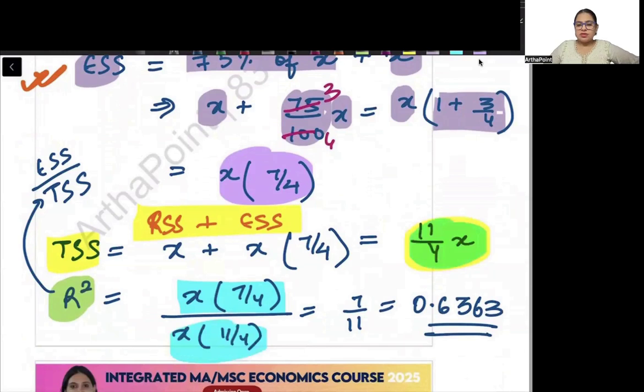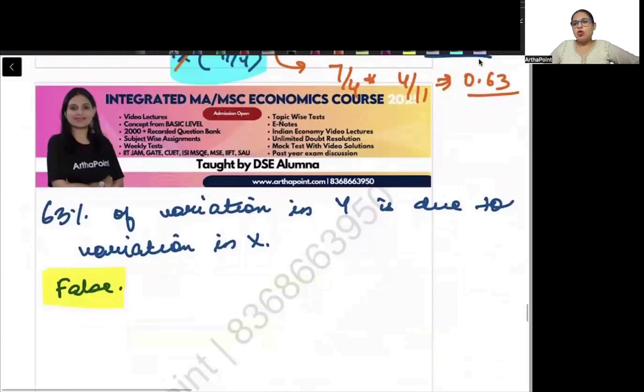So when you will be solving this, X and X will get cancelled and this will be 7 by 4 into 4 by 11 that means 0.63. So your R square is 0.63.